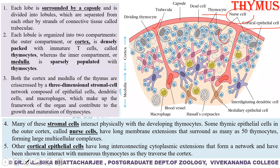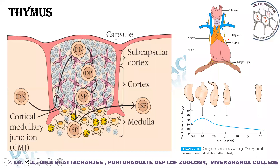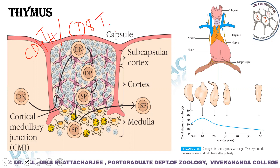Another important function in the thymus is the maturation of a double-negative T cell into a single-positive T cell. T helper cells are categorized by the presence of the CD4 receptor, while T cytotoxic cells are categorized by the presence of the CD8 receptor. Double-negative precursor T cells do not have either the CD4 or the CD8 receptor.